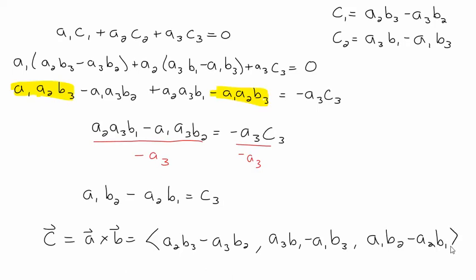Notice that in the first component of C, you use the second and third components of A and B. In the second component of C, you use the first and third components. And in the third component of C, you use the first and second. That's one way to help remember what goes with what. There's also another way to do this with determinants, but this was the derivation of the formula.